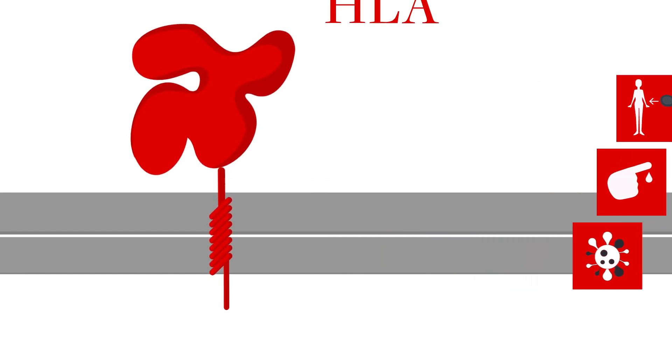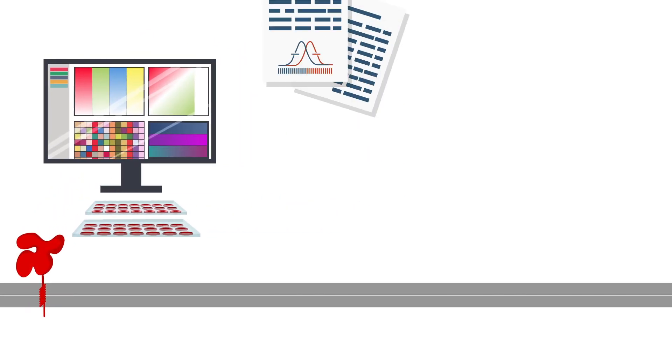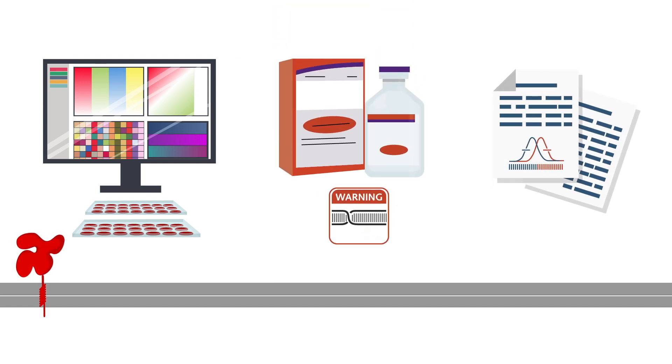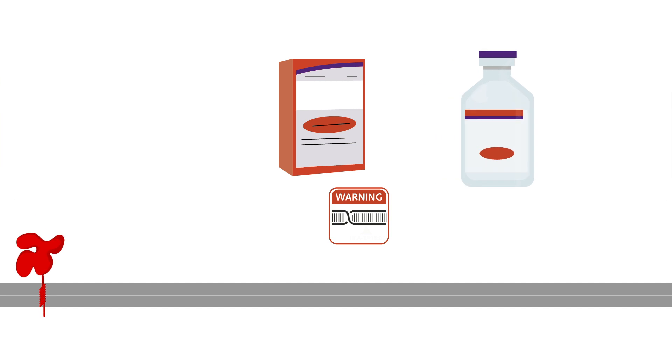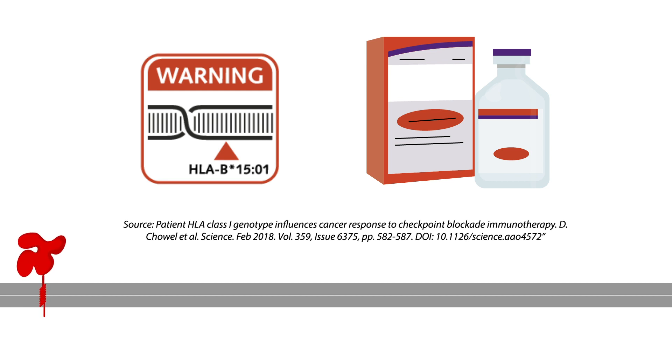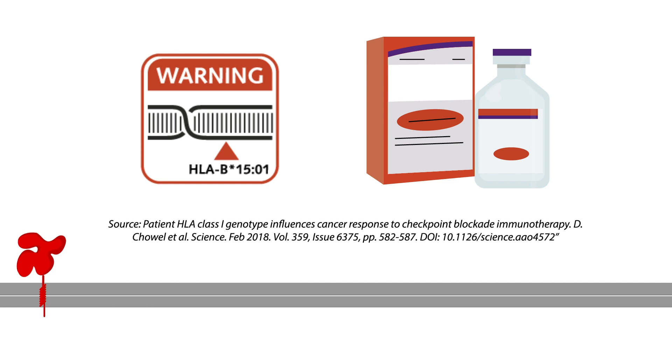HLA information is used for a variety of purposes in preclinical research, such as drug screening, determining disease susceptibility, or matching drug reactions with gene sequences. For instance, HLA-B-1501 individuals with the HLA class I genotype have been associated with specific cancer responses to checkpoint blockade immunotherapy.